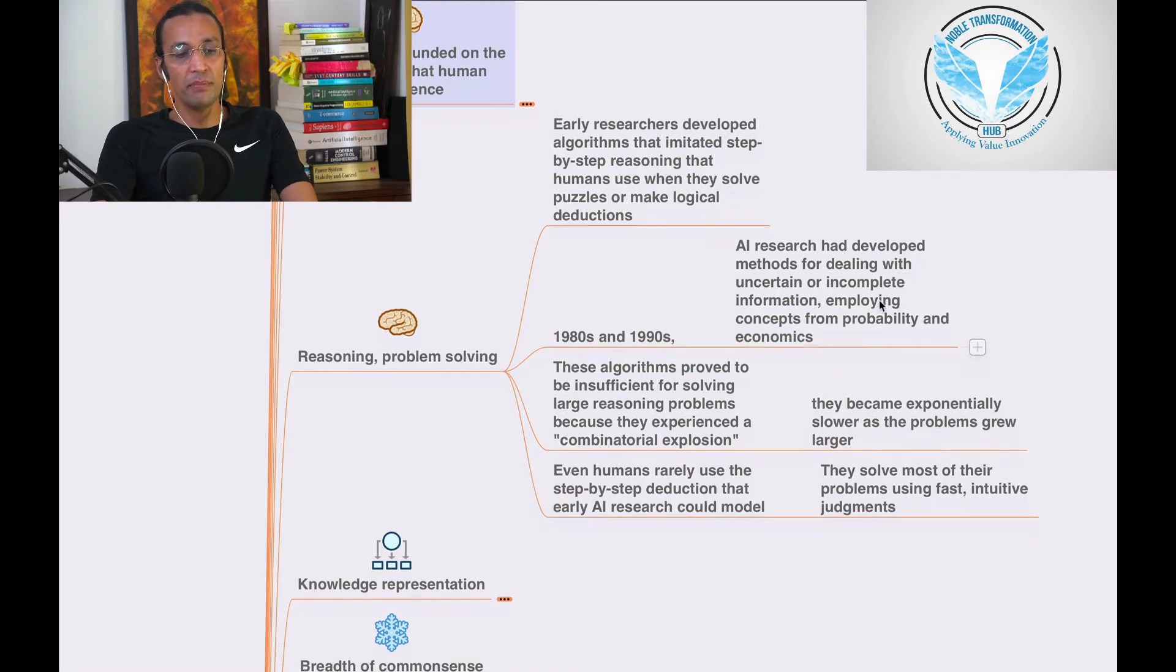In the 1980s and 1990s, AI research had developed methods of dealing with uncertainty and incomplete information, employing concepts from probability and economics. They started going to statistics and probability, and I think they realized we need data.